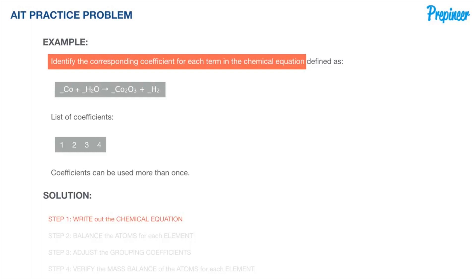Let's get started with step one: writing out the chemical equation. In some cases we will need to identify all reactants and products and write their correct formulas on each side. Luckily, we are given the chemical equation to work with, so we do not need to worry about translating nomenclature. We will just rewrite the chemical equation as given and move on to step two.